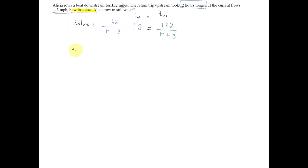So we'll clear denominators by finding the LCD. Well, there's only two denominators, so that's the LCD, r minus 3 times r plus 3.